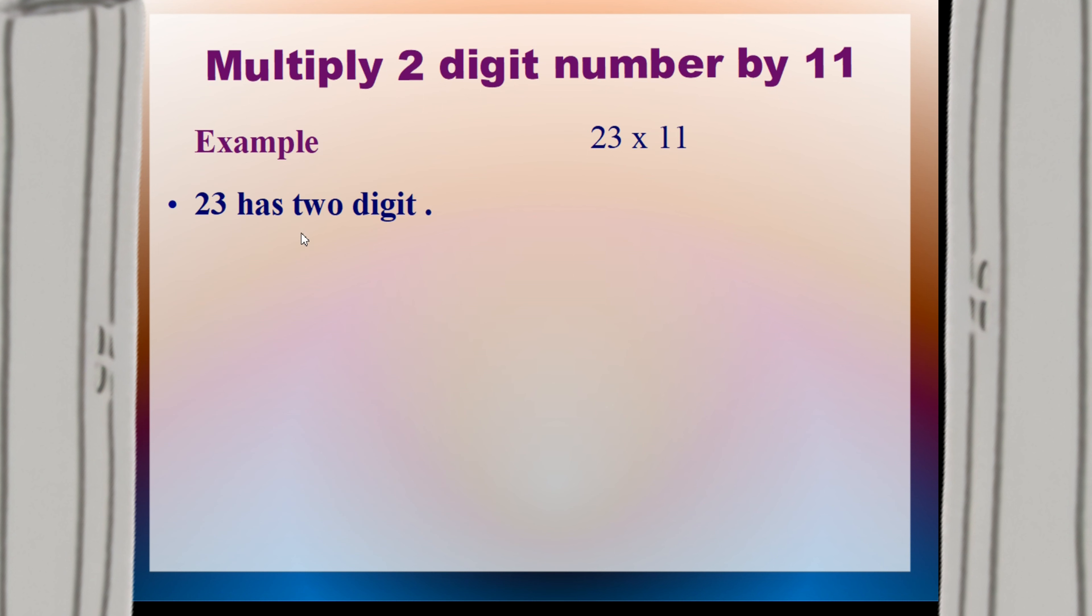Your first step is you have to count the digits, which are 2 and 3. Then add both the digits. 2 plus 3 is equal to 5. And next step is write the sum 5 between 2 and 3. It's 2 space 3 and in between 5 will go there.